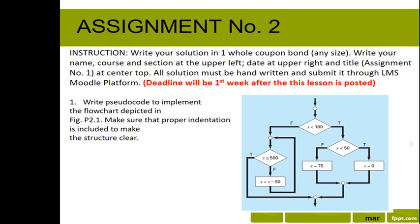For assignment number two, write your solution in one whole paper. Write your name, course, and section at the upper left, date at upper right, and title at center top. Given the following figure, you are tasked to write pseudocode to implement the flowchart depicted. Make sure proper indentation is included to make the structure clear. This is an example of DO-END DO combination. No answer should be posted in Canvas platform—it should be handwritten.